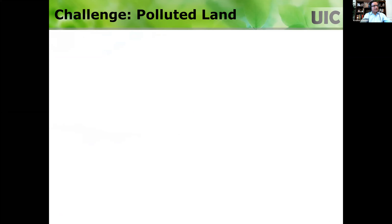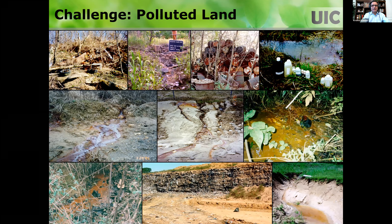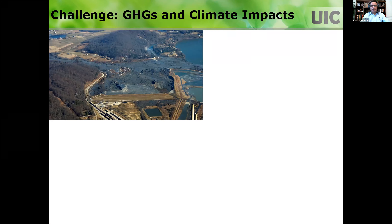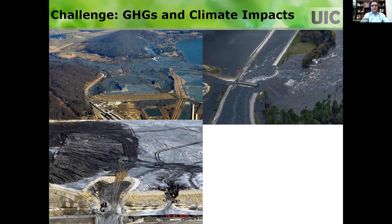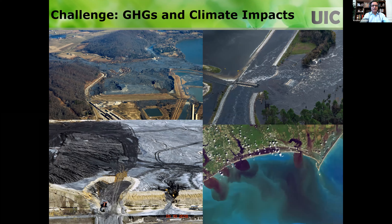In addition to waste and byproducts, we have a problem with polluted land. In the past, we didn't care about how we handled waste, and there are also accidental spills. As a result, many sites have been contaminated, and we have soils and groundwater with nasty contaminants that need to be addressed. Recently, everyone has become aware of greenhouse gas emissions and climate change, which are threatening how we handle waste containment systems or even geotechnical systems.